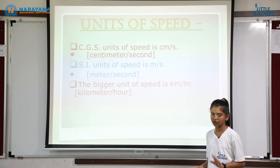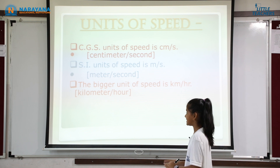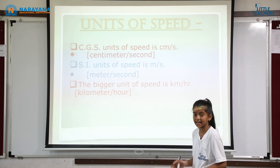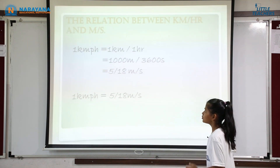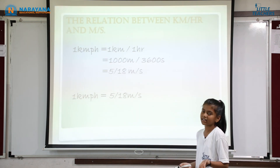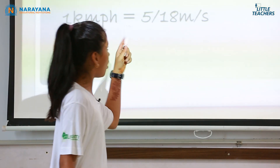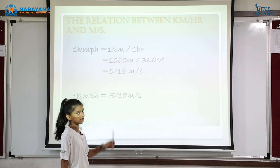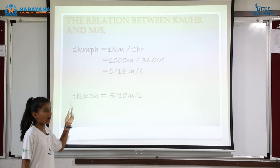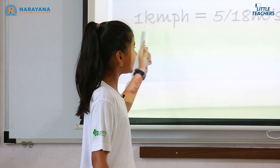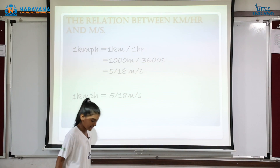There are some units for speed. The CGS unit is centimeter per second. The SI unit is meter per second. The bigger unit is kilometer per hour. The relation between kilometer per hour and meter per second is: 1 kilometer per hour equals 1000 meters divided by 3600 seconds, which equals 5/18 meters per second.